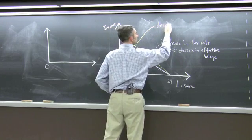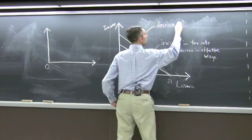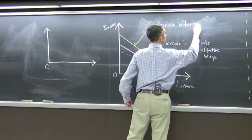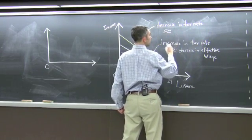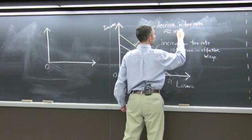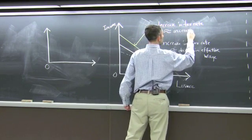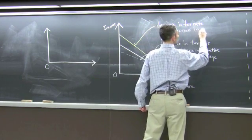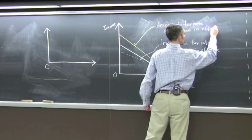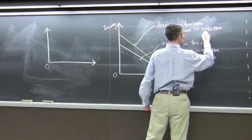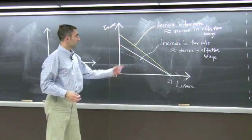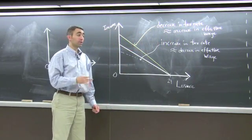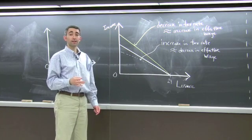So a decrease in the tax rate is basically equal to an increase in my effective wage. And as long as you can remember that part, you can work through the income and the substitution effects the same way.